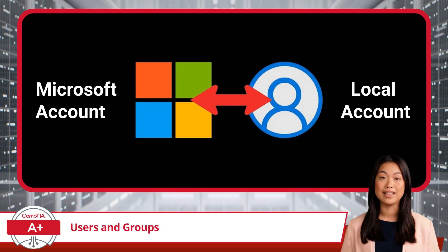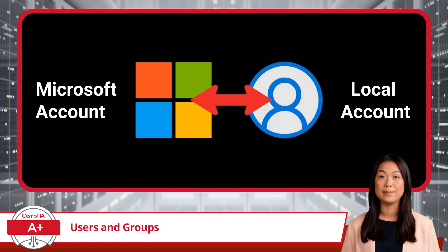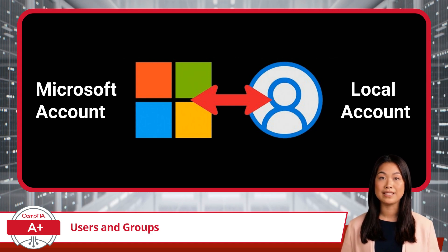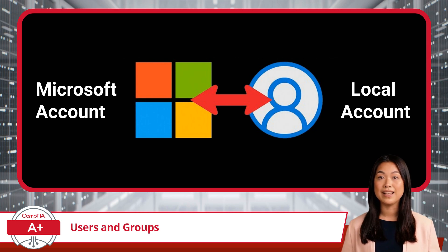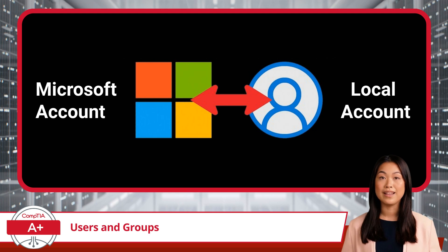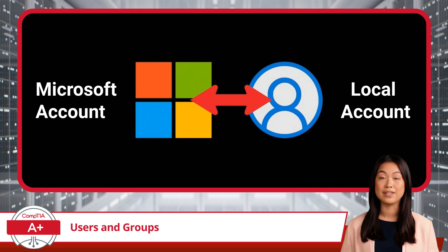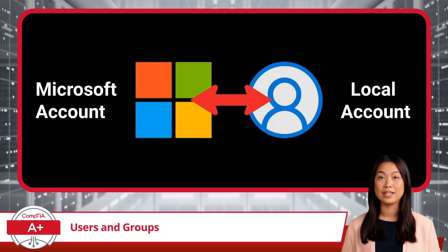For instance, your Windows settings, files, and even browser bookmarks can sync across your laptop, desktop, or even your phone. This can be particularly useful if you frequently switch between devices or want the convenience of accessing your files from anywhere. On the other hand, a local account is tied only to the device itself. It doesn't offer the cloud-syncing options that a Microsoft account provides — everything stays local to that specific device. A local account is ideal for someone who prefers a more traditional, offline experience, doesn't need cloud services, or wants to keep their data completely local and independent from Microsoft's cloud infrastructure. This is often the choice for users who prioritize privacy or use their computer in a more isolated, offline environment.